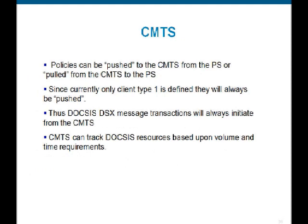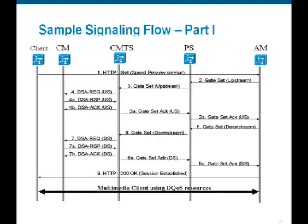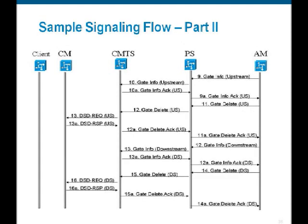The CMTS receives the policy from the policy server and initiates signaling on the access network side to set up a dynamic service flow with the relevant QoS. A signaling flow shows the client contacting the application manager, triggering messaging to the policy server and eventually to the CMTS, where the dynamic service flow is established through access network signaling. The same process applies when it is time to delete a flow and release resources.